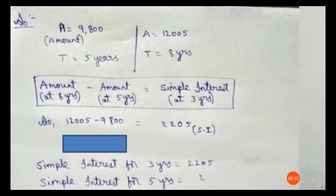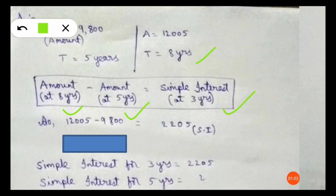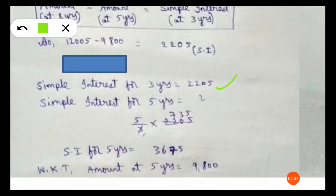Amount after five years is 9800 rupees, and amount after eight years is 12500 rupees. Amount at eight years minus amount at five years equals simple interest for three years (since 8 − 5 = 3). So simple interest for three years = 12500 − 9800 = 2700 rupees. Simple interest for five years = (5/3) × 2700 = 4500 rupees.